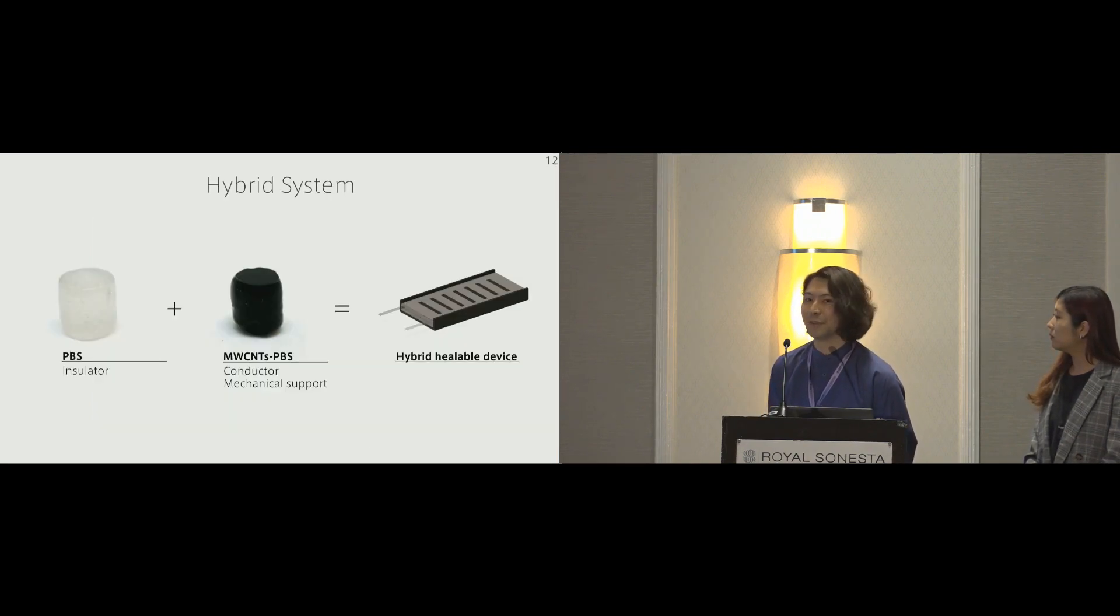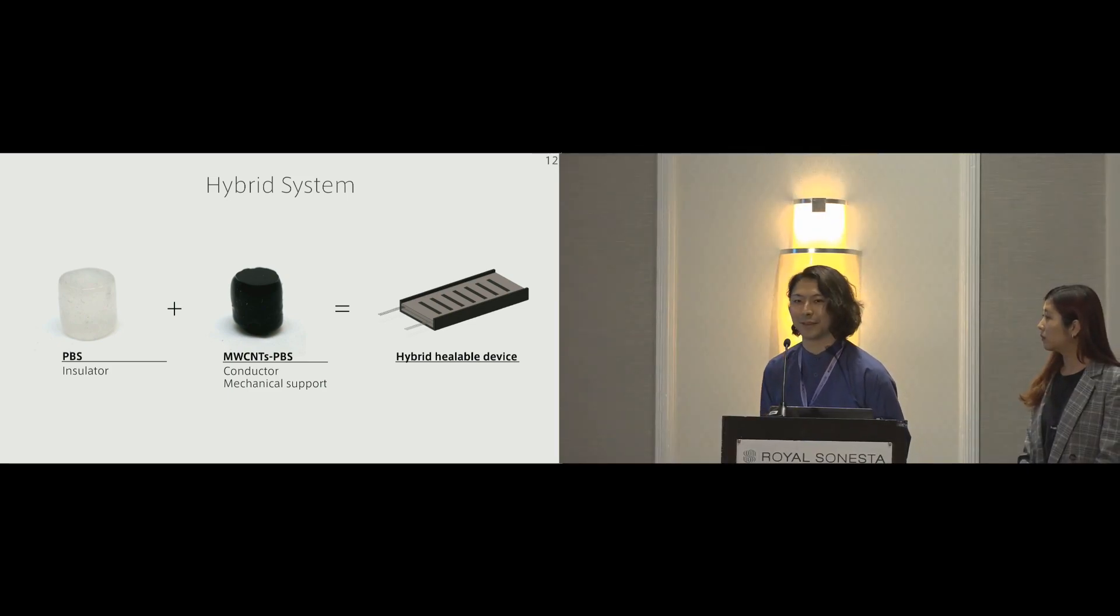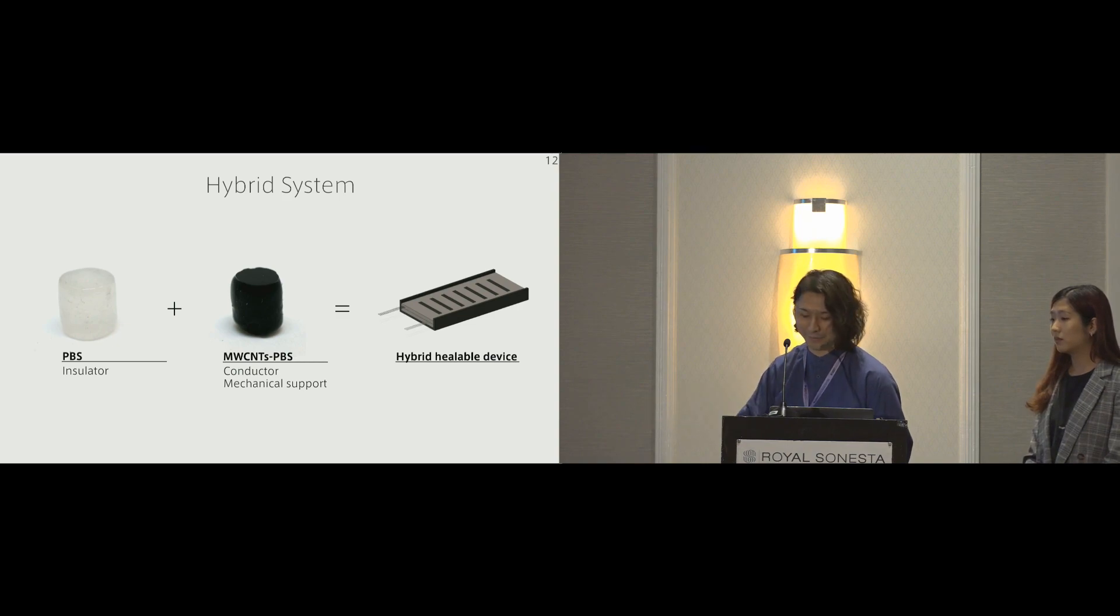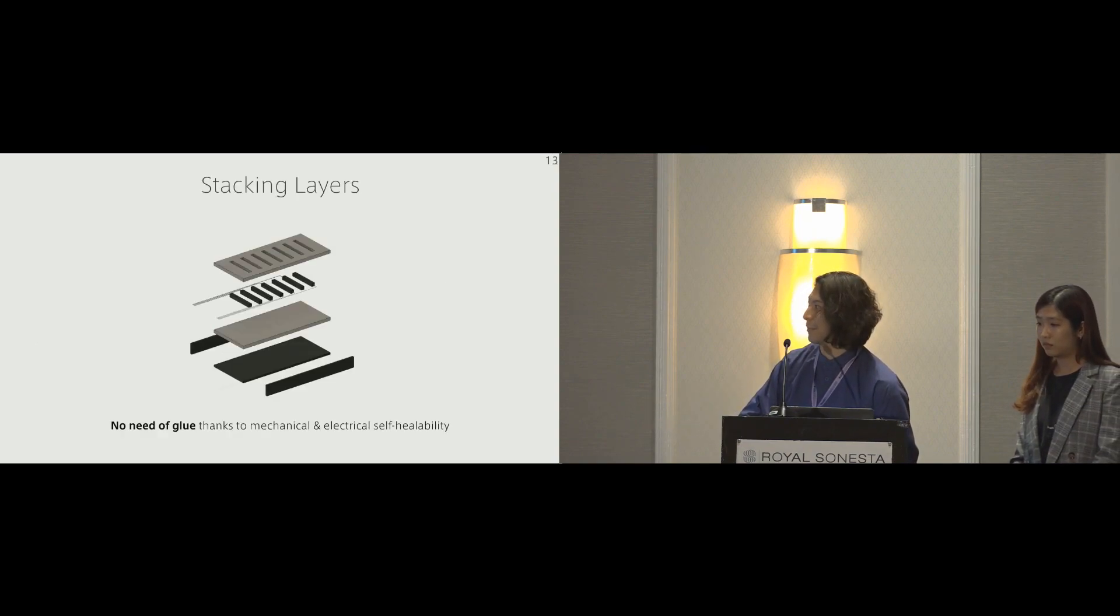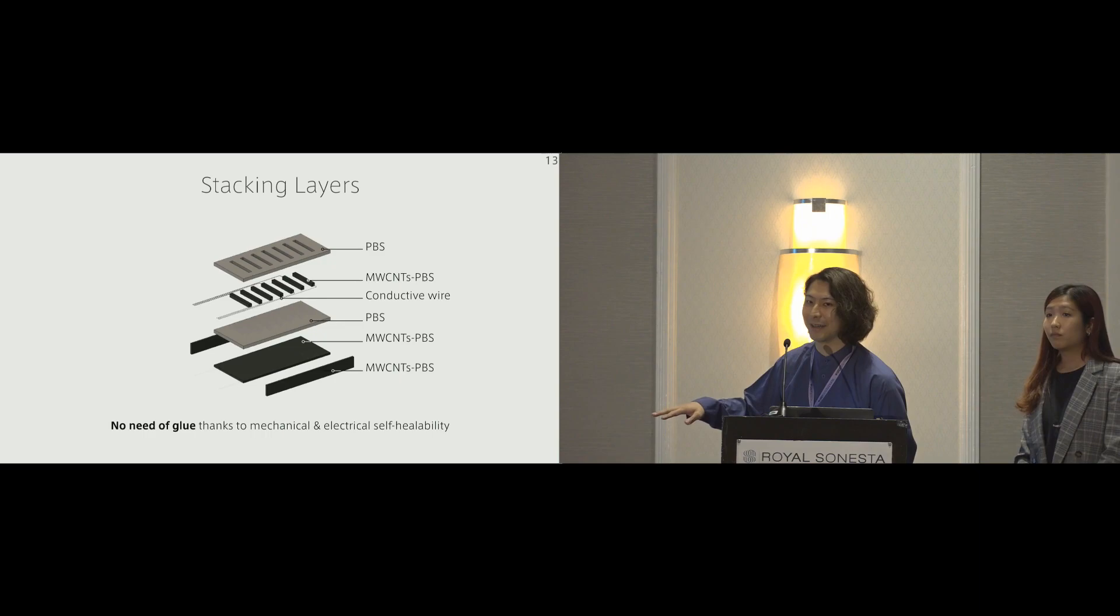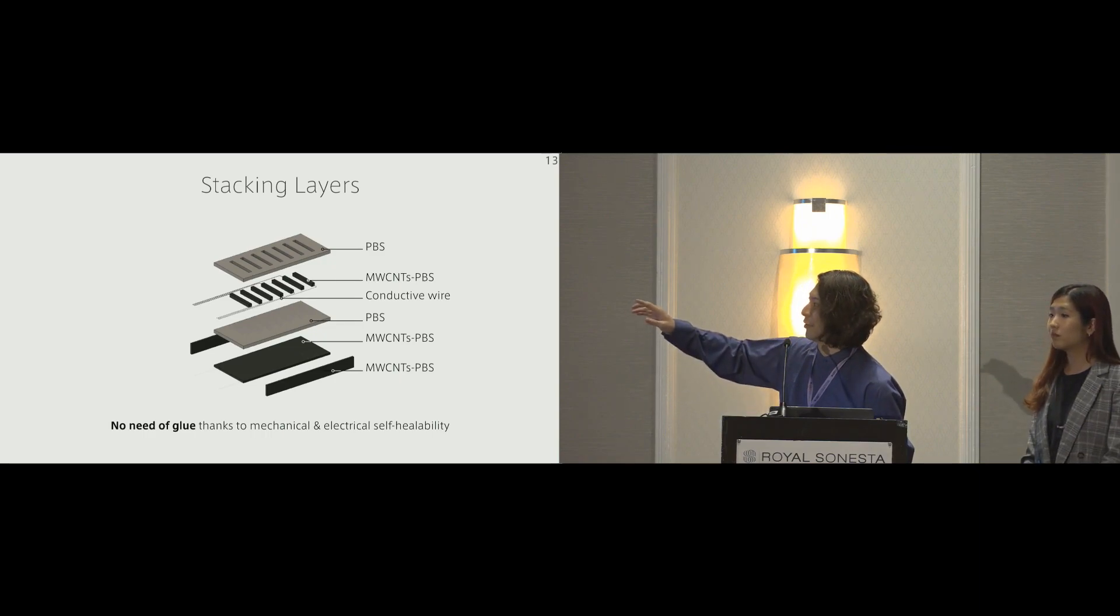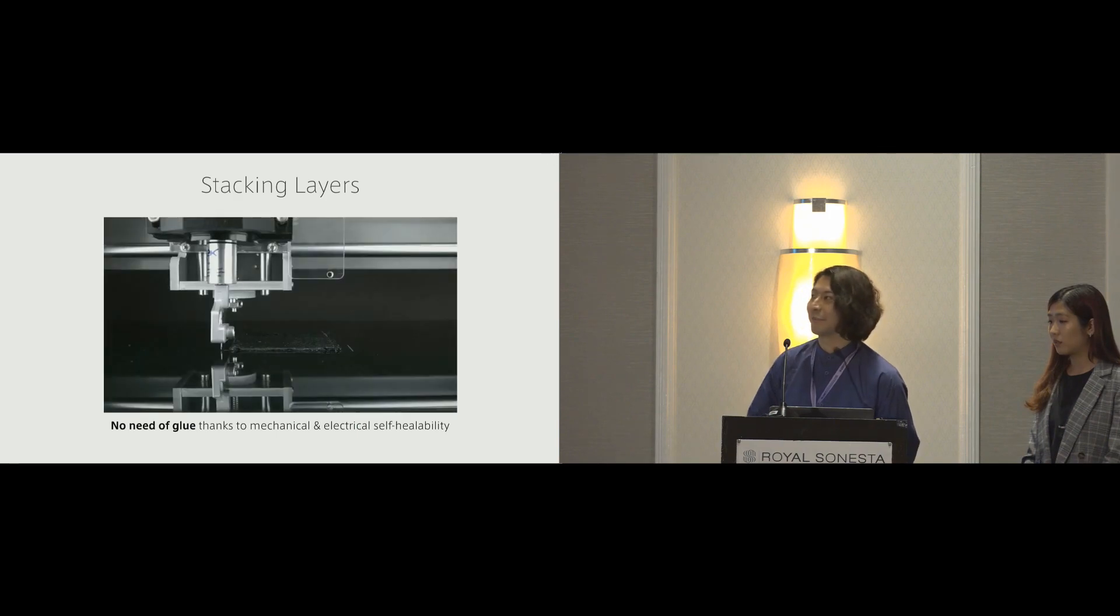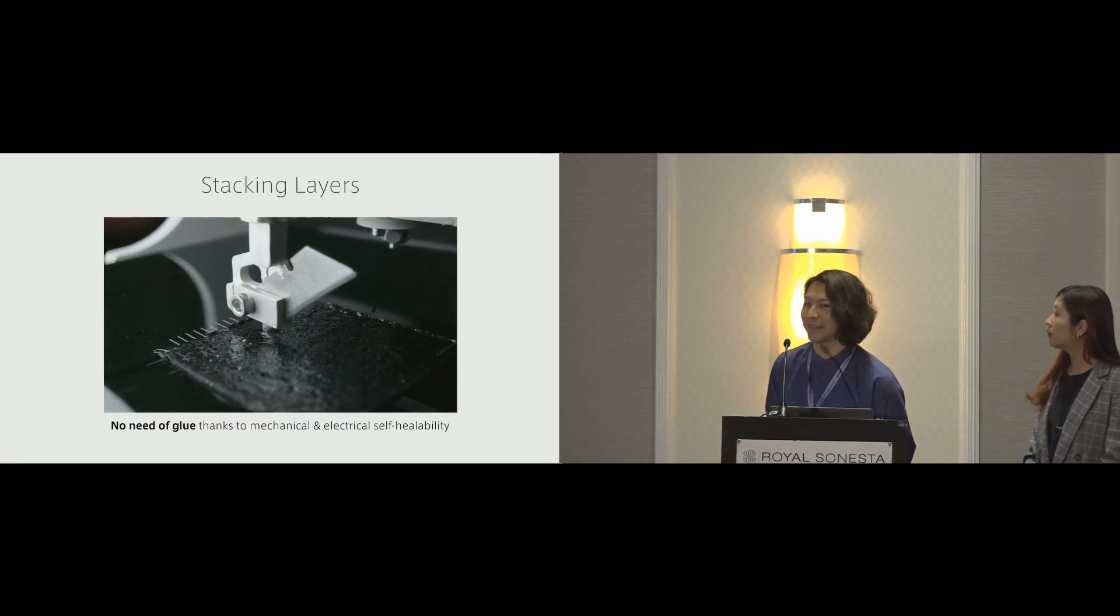Our idea is to build a hybrid system of PBS and multi-walled carbon nanotubes PBS to build a hybrid healable system, in which PBS works as an insulator, while multi-walled carbon nanotubes PBS works as a conductor and also a mechanical support to constrain the whole system. For example, if you want to make a device like a controller, we can use carbon nanotubes PBS at the bottom as a mechanical constraint, and also use it as a sensor matrix in the middle layer, which are sandwiched by the insulated PBS layers.